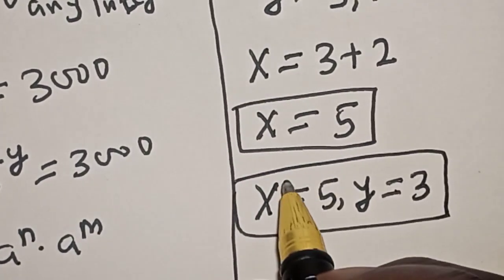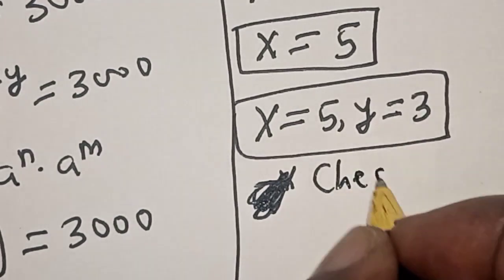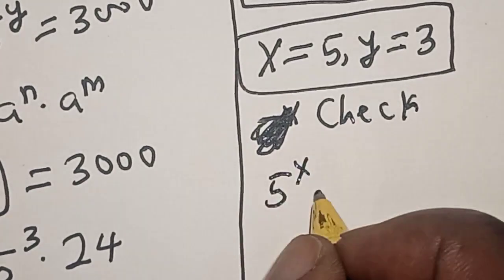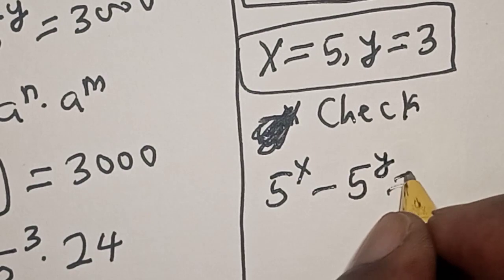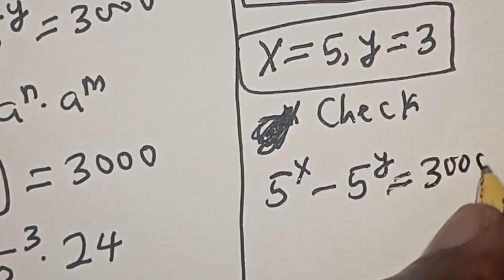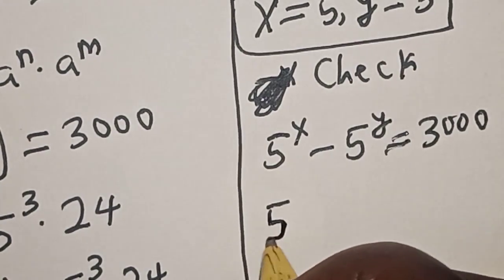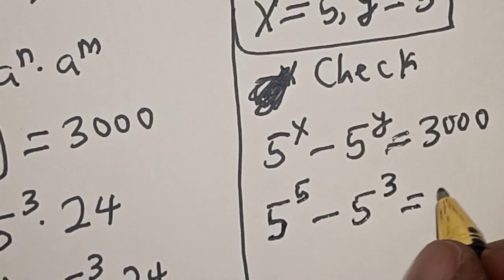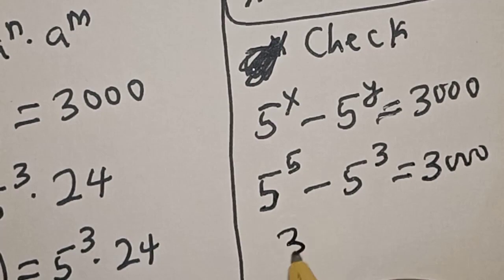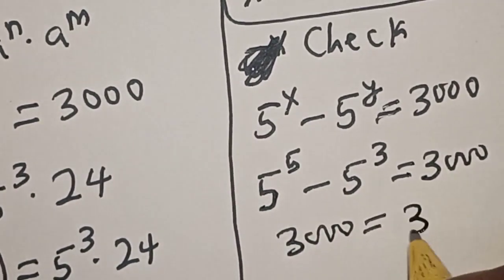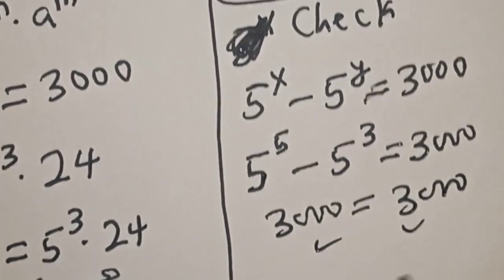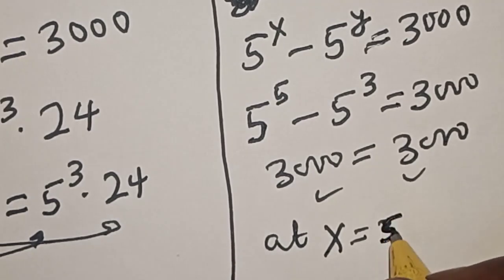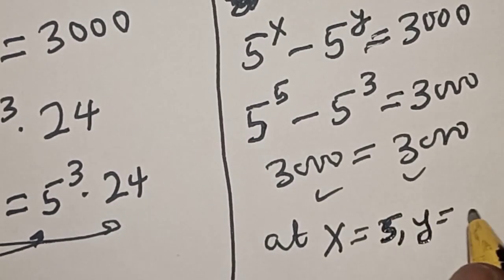That is our final answer. We can check to confirm if this answer is right or wrong. For us to check, we have the given equation: 5 raised to power x minus 5 raised to power y is equal to 3,000. Our x is 5, so we have 5 raised to power 5 minus 5 raised to power 3. This equals 3,000, meaning the left-hand side 3,000 equals the right-hand side 3,000. So we satisfy the given equation at x equal to 5 and y equal to 3.